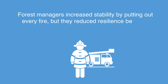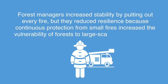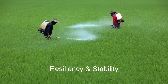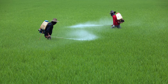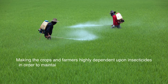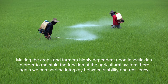The forest managers increased stability by putting out every fire, but reduced resilience because continuous protection from small fires increased the vulnerability of the forest to large-scale destructive fires. Another example would be the use of chemical insecticides to remove unwanted insects from agricultural crops. The insecticides may also kill predator insects as well as pest insects, so the natural control of pest insects by predators is lost. Without natural control, pest insect populations can increase to devastating numbers, making crops and farmers highly dependent upon insecticides in order to maintain the functionality of the agricultural system. Here again we can see the interplay between stability and resilience.